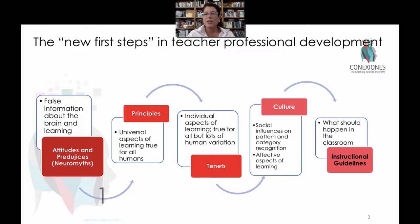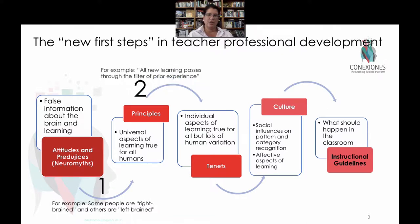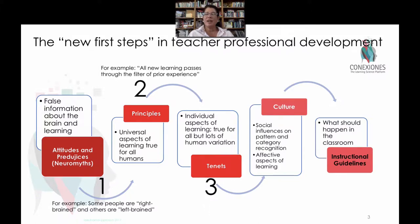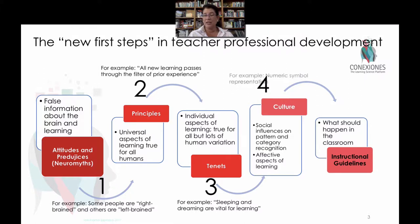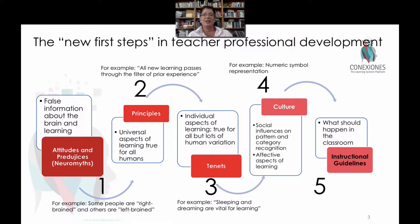As we mentioned in the course on principles, there's really only a handful of really good information that should be shared with teachers that comes out of neuroscientific labs. And these are kind of divided into two different chunks. Principles are things that are true for all human brains across the lifespan, and Tenants are things that are also true about the human brain, but there's a really big range of human variants.